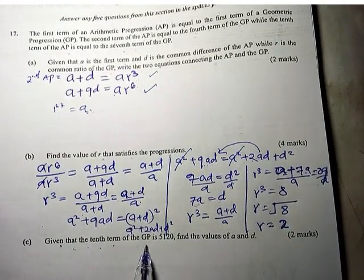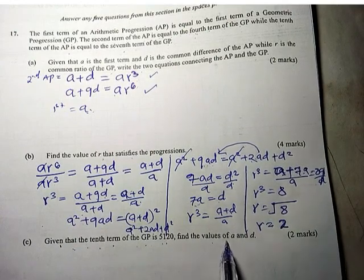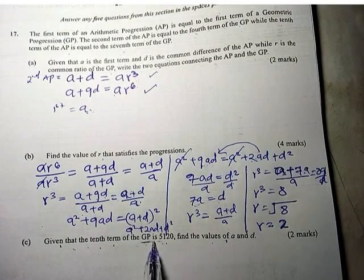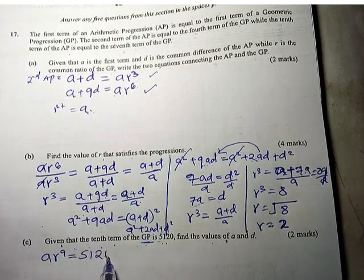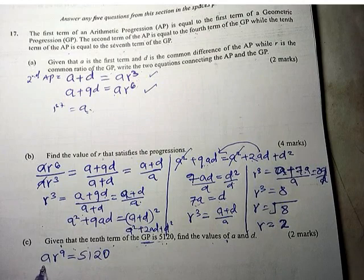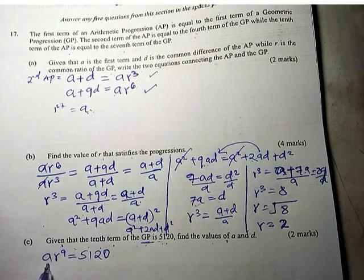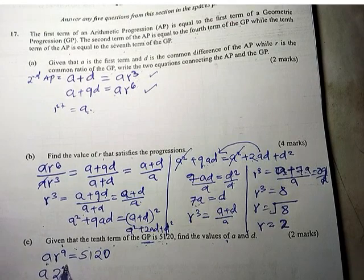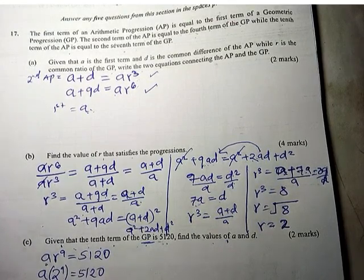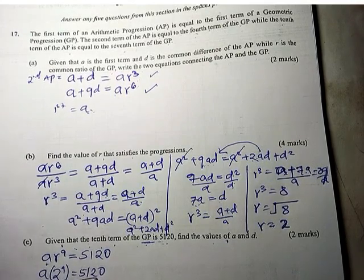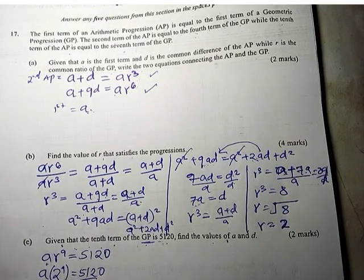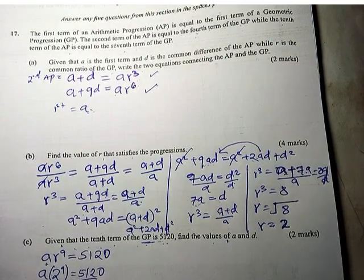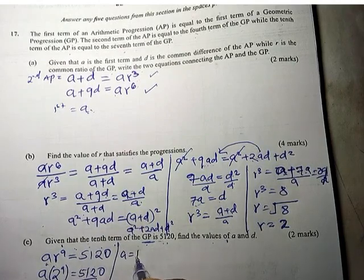Given that the 10th term of the GP is 5120, find the values of A and D. The 10th term is AR⁹ = 5120. We know R = 2, so A × 2⁹ = 5120, meaning A × 512 = 5120. Dividing: A = 5120 ÷ 512, so A equals 10.